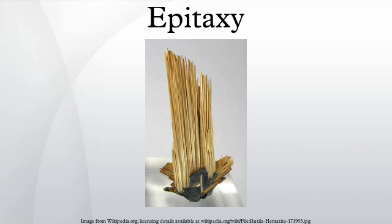Some pairs of minerals that are not related structurally or compositionally may also exhibit epitaxy. A common example is rutile (TiO2) on hematite (Fe2O3). Rutile is tetragonal and hematite is trigonal, but there are directions of similar spacing between atoms in the plane of rutile and the plane of hematite. In epitaxy, these directions tend to line up with each other, resulting in the A axis of the rutile overgrowth being parallel to the C axis of hematite.